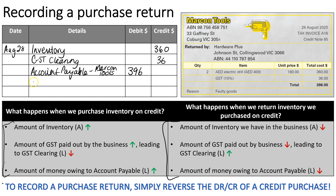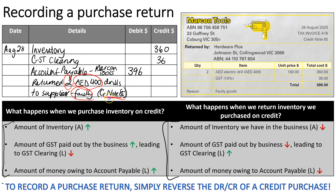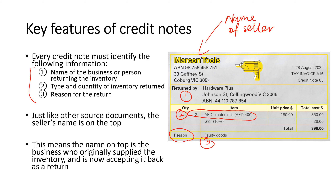The narration will say something like: 'Returned two AED electric drills to supplier, faulty, Credit Note 85.' The narration includes how many, what type, and the reason — and also the source document reference, which must be included in every narration. These three elements came directly from the credit note source document.